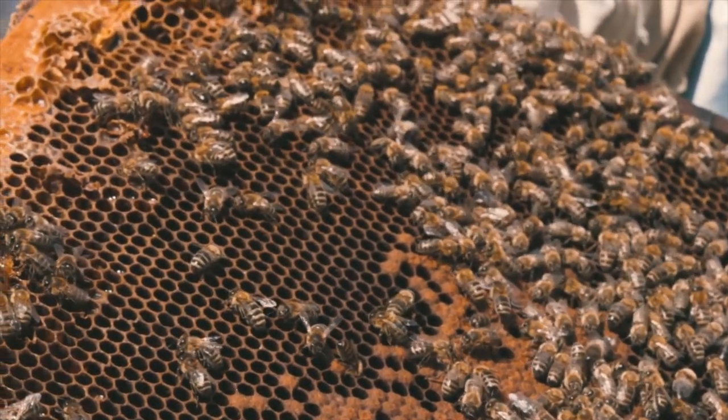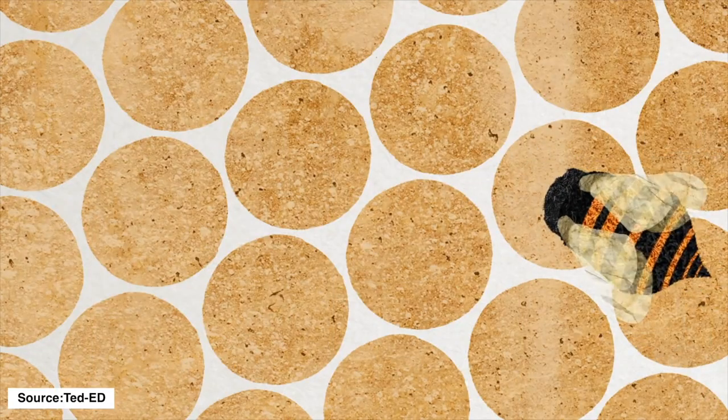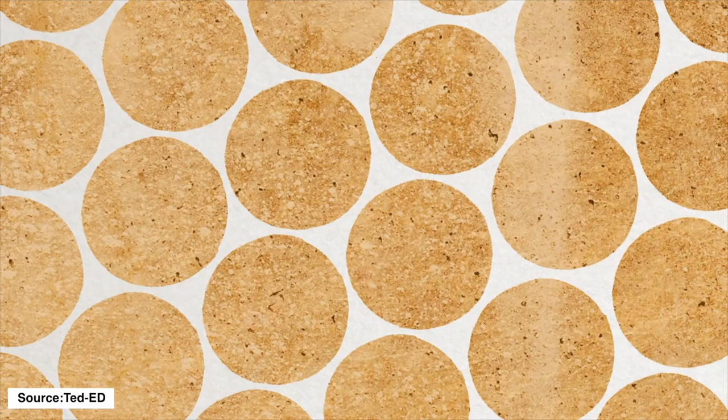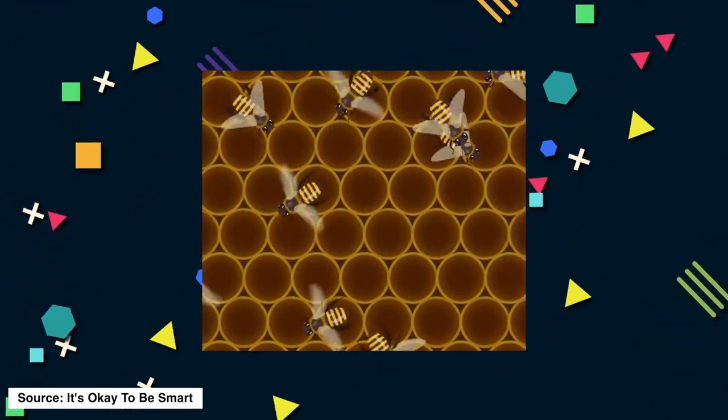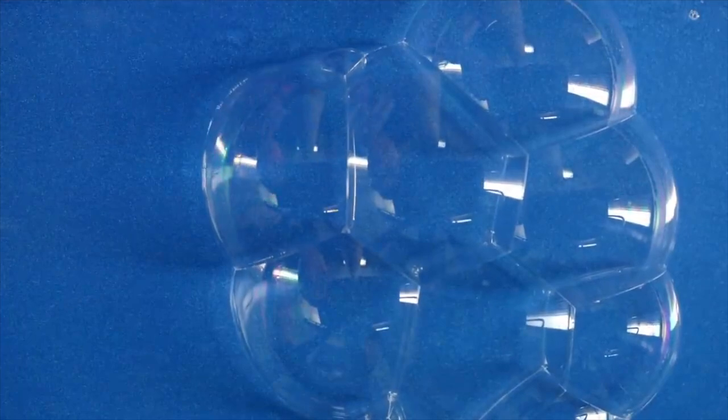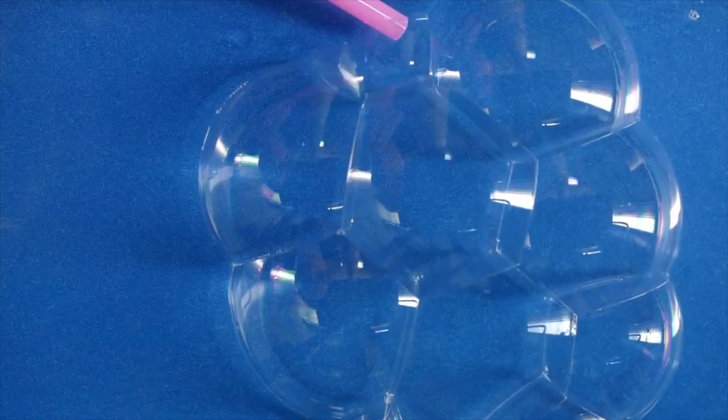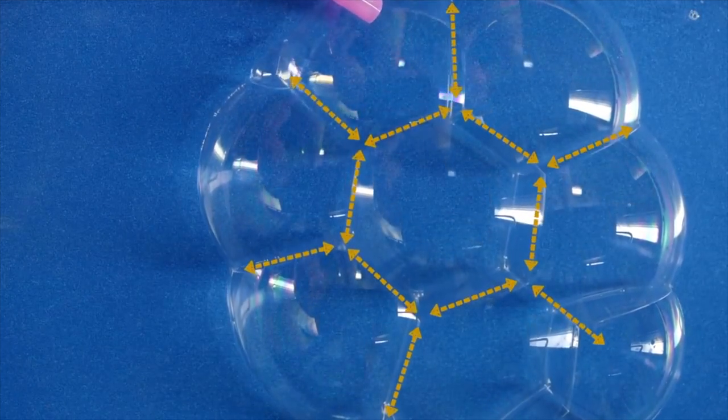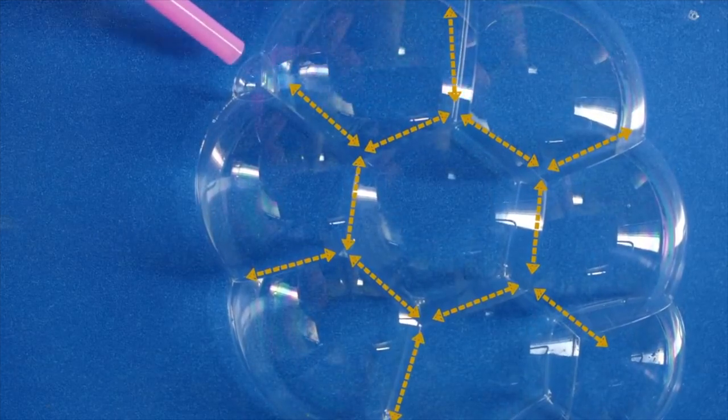Now, the same theory is applicable in the case of beehives as well as the bubble raft. Beehives have round cells in the beginning, but over time, the surface tension of the wax, which is the force that wants to minimize the perimeter, causes the round cells to turn into hexagon cells. The same goes for the bubble raft. The surface tension of water gives the hexagon shape when n number of bubbles come together.